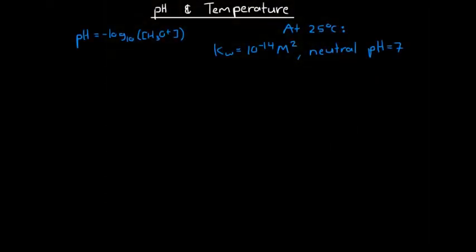In this video, we're going to look at how pH and temperature are related. We've got a few facts about pH written up at the top here. This is the formula or equation that we use to calculate pH: pH is equal to the negative logarithm of the concentration of hydronium ions in a solution.